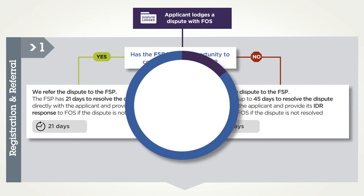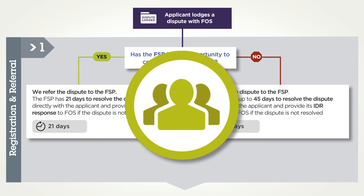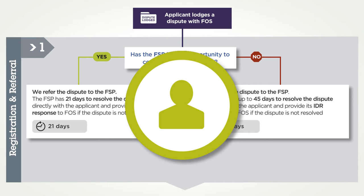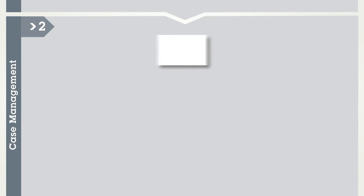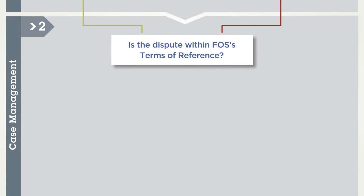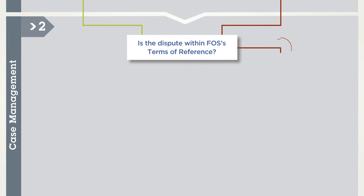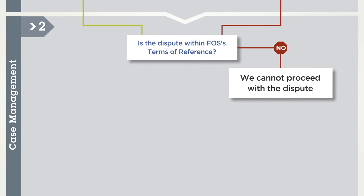When a complaint remains unresolved, it will be referred to a case worker. In most cases, you will deal directly with a single FOS staff member. The first thing we will consider is whether the dispute falls within our jurisdiction. There are some things that we cannot deal with, as these fall outside our jurisdiction.